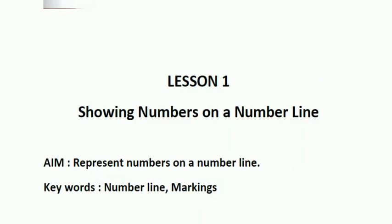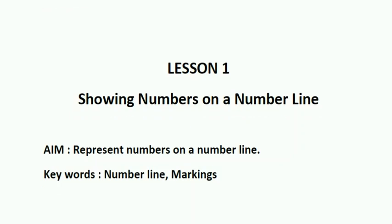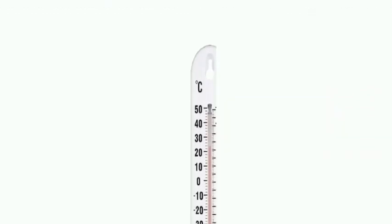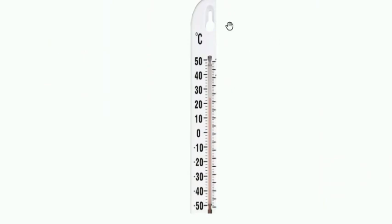Can you name the thing in your pencil box on which numbers are written in a line? Yes — a ruler. On a ruler you can see numbers written in a line. Can you name another thing on which numbers are written in a line? Here you can see a thermometer. In a thermometer you can also see numbers written in a line.